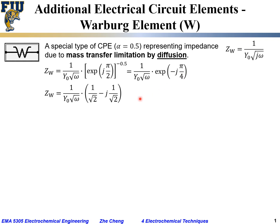We can expand the exponential term into cosine and sine parts. The cosine of −π/4 gives 1 over √2, and the sine of −π/4 gives −1 over √2. So we can express the impedance in either polar form or in real and imaginary form.